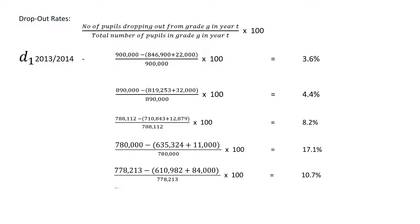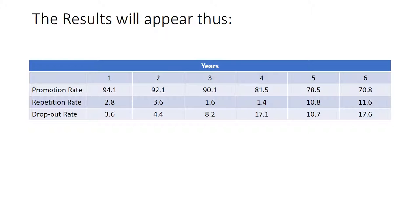Following that same trend to get all others, when you get to the final one — year 6 — you want to know the total number that dropped out from year 6. You go back and look at the total number given as graduated from year 6. You pick that total number that graduated and subtract it from the total enrolled, following the same trend. You will have 17.6%. By this way, you would have gotten your rates, which you are going to use to compute the efficiency rates. The figures are then put in a proper table showing promotion rate and repetition rate for each year from year 1 to year 6, and these figures are used for further calculation.